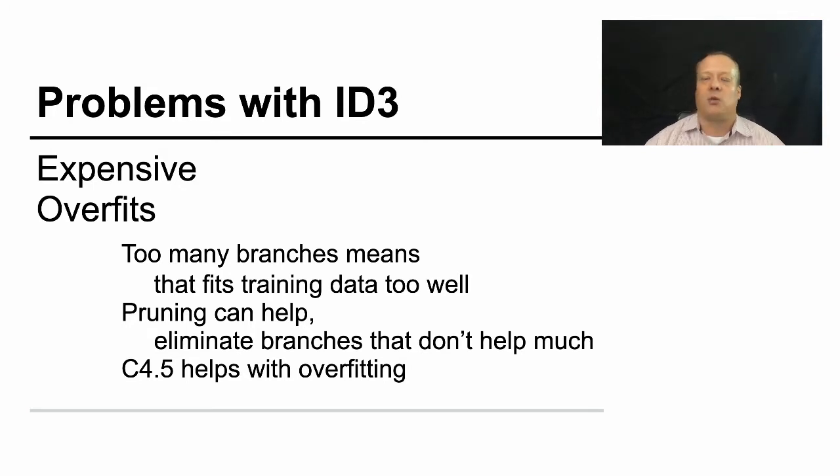And what do we mean by overfits? Well, it's going to put every single example of a previous customer you've seen to a particular tree node. So if you have one crazy customer whose features don't match any of your other customers, it's going to find a way to put them into that matrix, that decision tree. And so it's going to fit the training data too well.